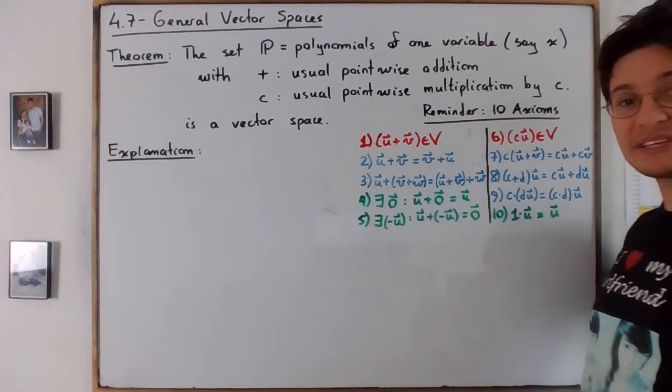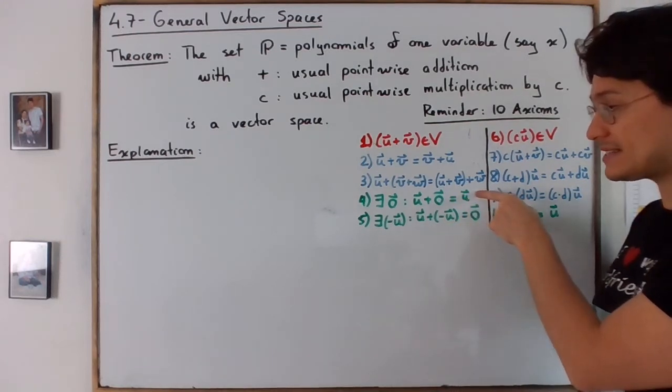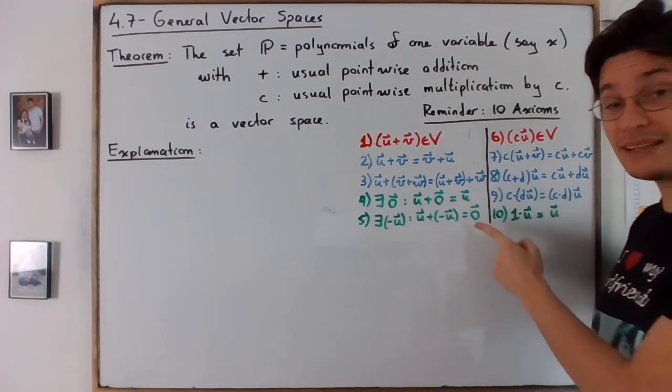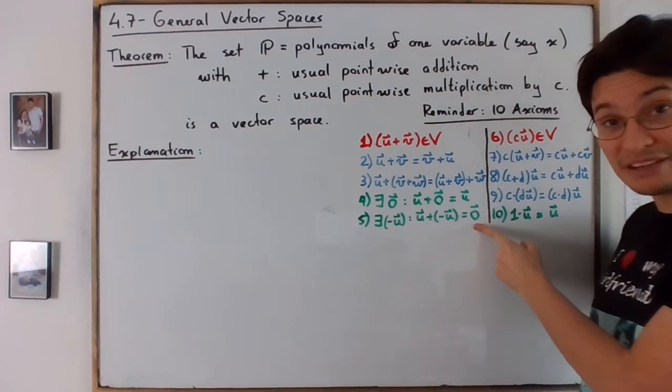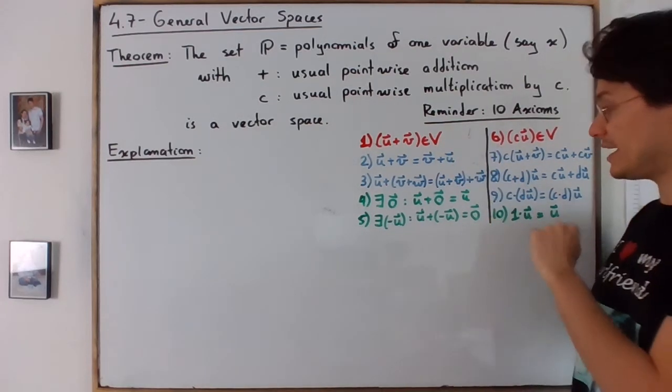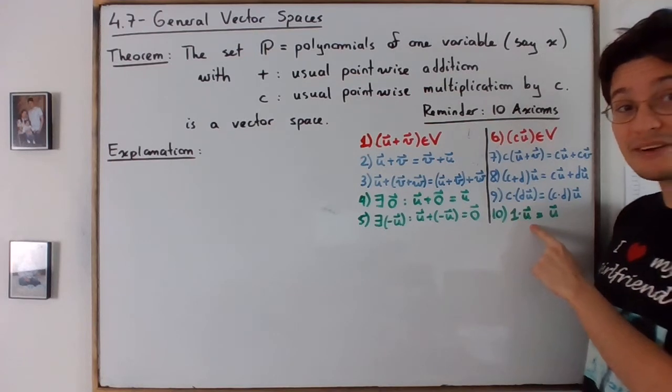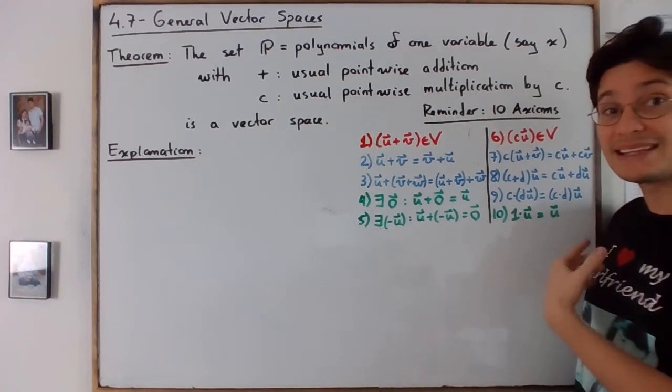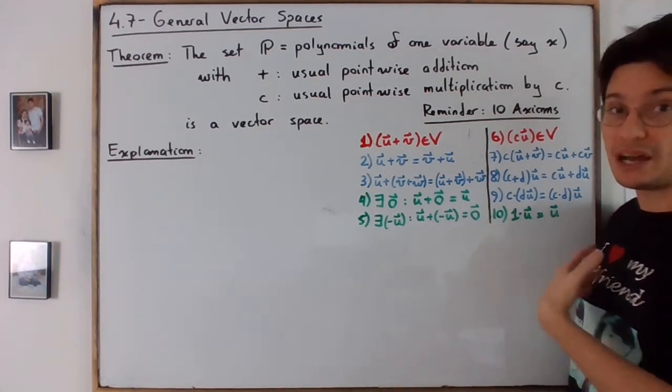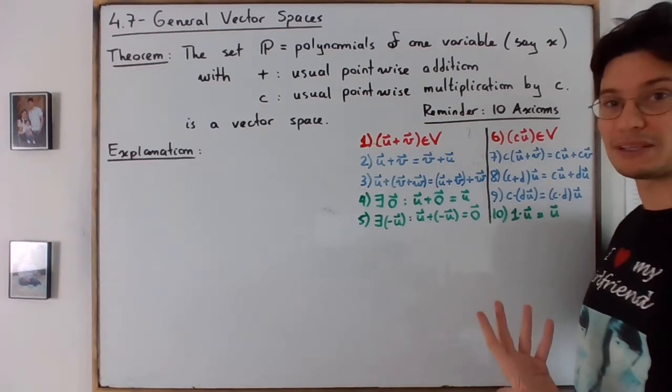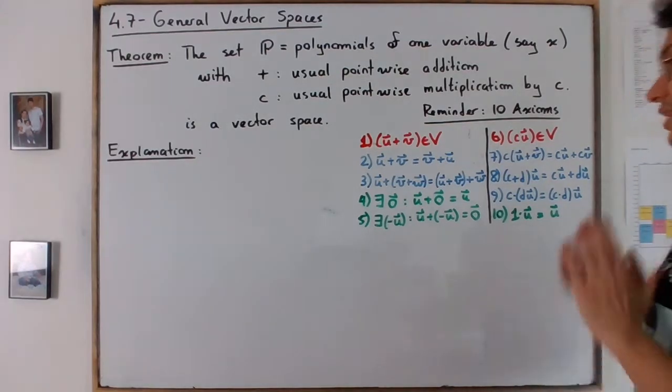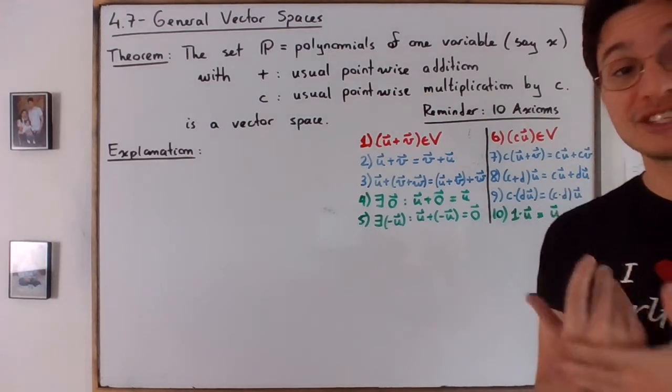And the green properties, well, these two is the existence of the zero element, existence of the additive inverse for the addition here. And the one, the number 10 here ensures that one is the identity element for scalar multiplication. Okay, with that in mind, let's proceed with the explanation.